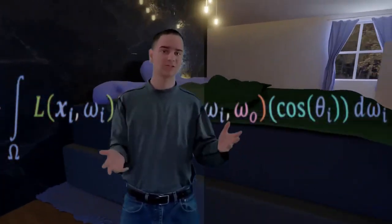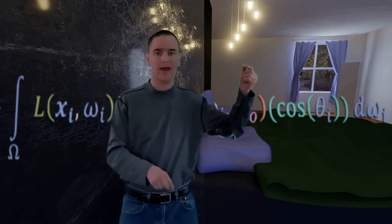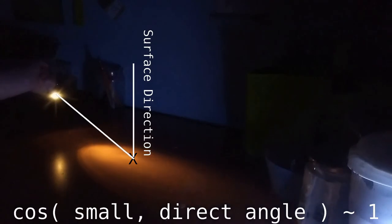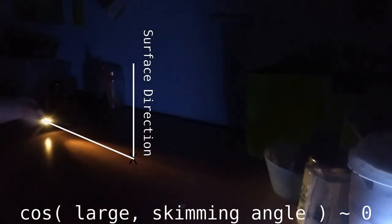Finally, we multiply everything by the cosine of the angle between the integral ray and the direction the surface is facing. That way, light shining directly on the surface will receive full intensity, while light only skimming the surface will receive less intensity.